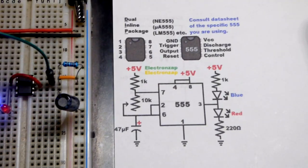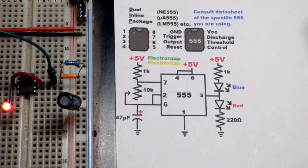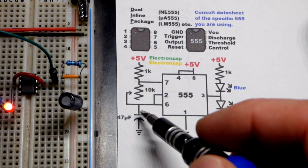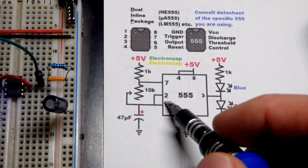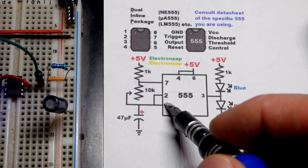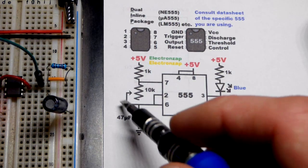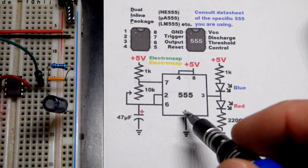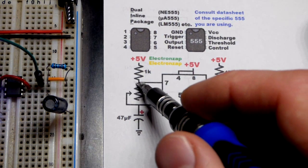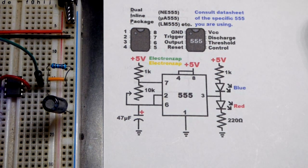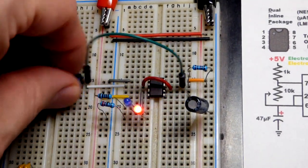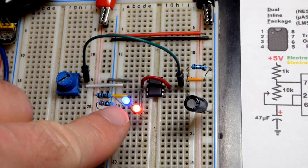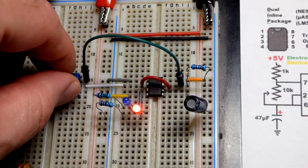So what we do is that when you got an astable mode 555 timer you apply power, the capacitor charges until it gets to two-thirds supply voltage. Pin 6 senses that and it sets the output low and discharges the capacitor. It's only going to discharge through the variable resistor though. So if we put this down to zero ohms of resistance, it's discharging practically instantly.